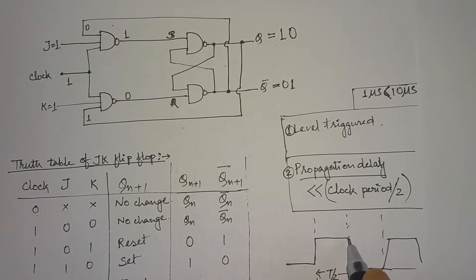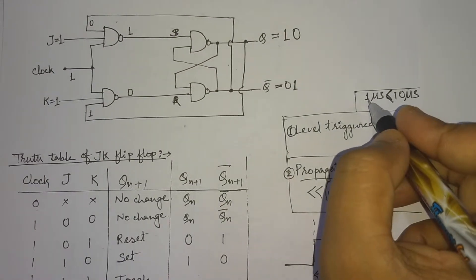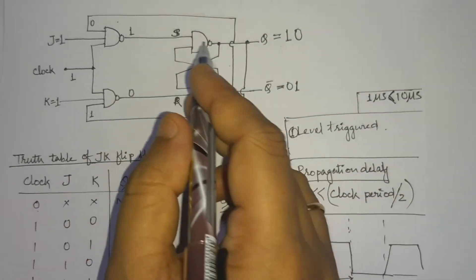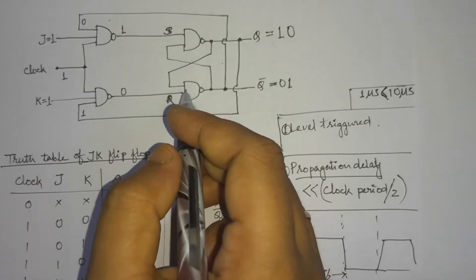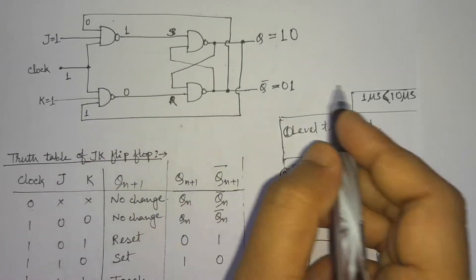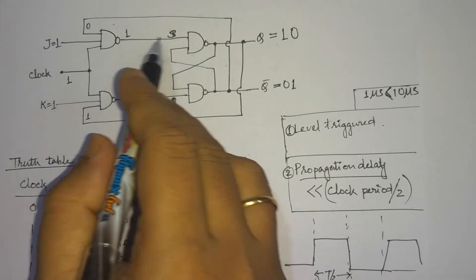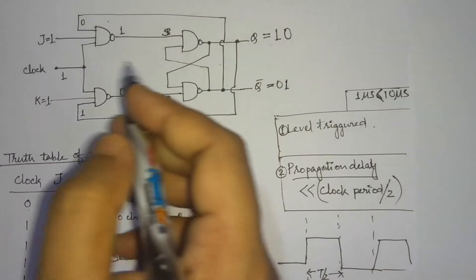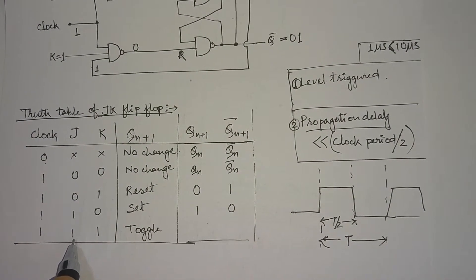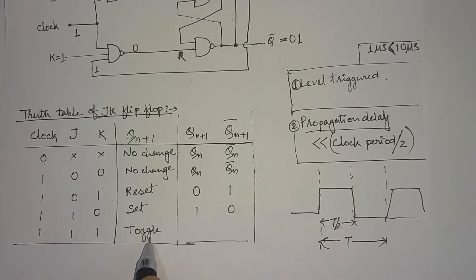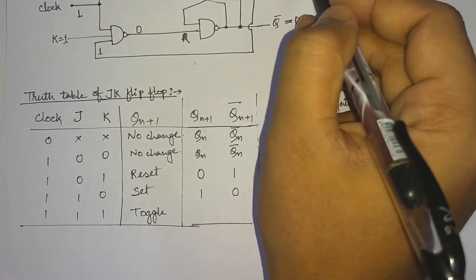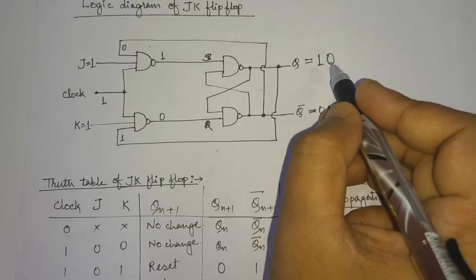During the propagation delay of 1 microsecond, the circuit toggles the output — because when J=K=1, the output toggles. If the output is 1, it goes to 0; if it is 0, it goes to 1. Now with Q=0, Q-bar=1 — since J=1 and K=1 are always high and clock is high, the feedback 1 and 0 values switch.